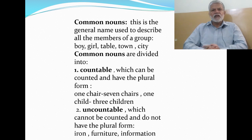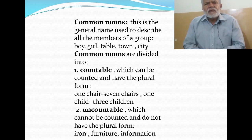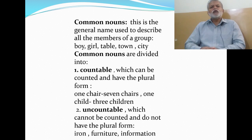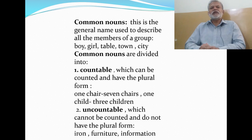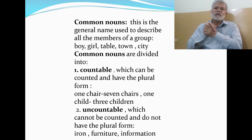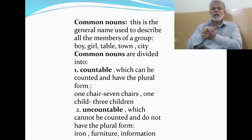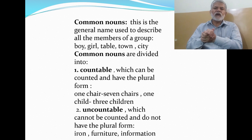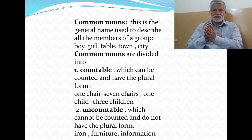Then there are common nouns. A common noun is the general name used to describe all the members of a group — names that may be used to describe all members of a group. For example: boy — all boys are boys; girl; table — all furniture items of a specific type are called table; town — there are different towns in the world; city — there are many cities. These are common nouns. Common nouns are divided into countable and uncountable.